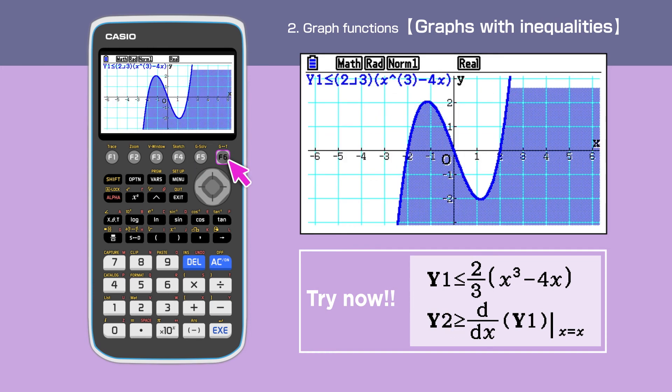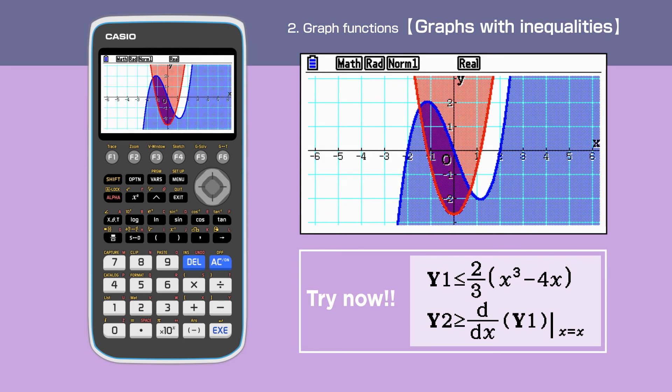Press F6 to draw the graphs. The areas have been colored in blue and red to satisfy both inequalities. In this example, union areas have been highlighted, but we can change this into intersection areas.